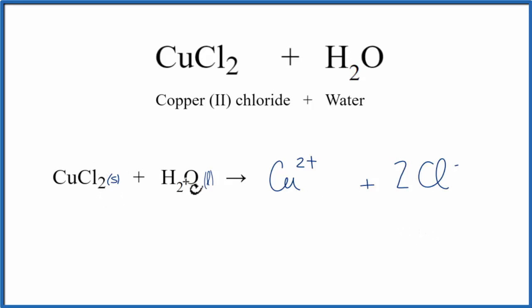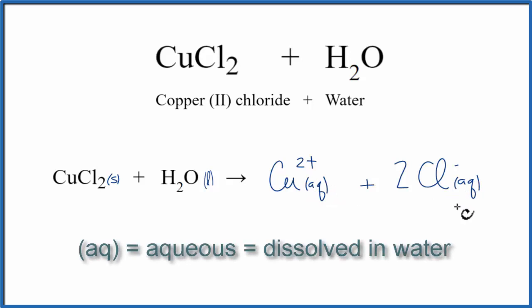Next, because we dissolved this in water, we're going to write Aq after each ion. That Aq means aqueous, or dissolved in water. And because we've written aqueous, we don't need to write the H2O again on this side of the equation.